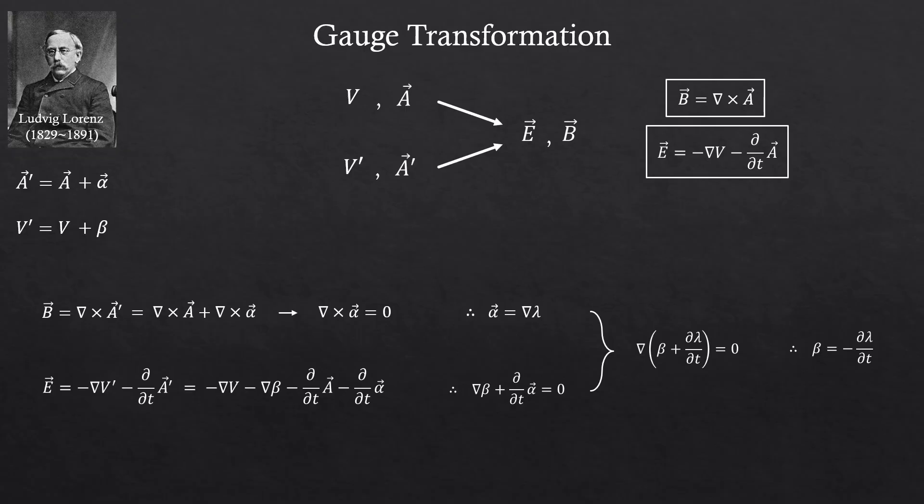Alright, so what we just did is, if we add the gradient of some scalar function to the vector potential A, and at the same time adjust V by subtracting d lambda over dt from it, then these new potentials A prime and V prime will give us the same electric and magnetic fields as the original A and V. That's the crazy part.